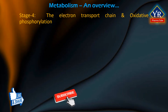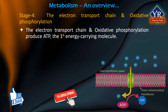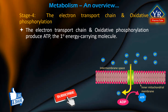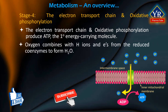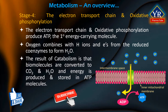Stage 4: The electron transport chain and oxidative phosphorylation. Within the mitochondria, the electron transport chain produces ATP — that is adenosine triphosphate — the primary energy-carrying molecule in metabolic pathways. Oxygen combines with hydrogen ions and electrons from the reduced coenzymes to form water. The result of catabolism is that biomolecules are converted to carbon dioxide and water, and energy is produced and stored in ATP molecules.